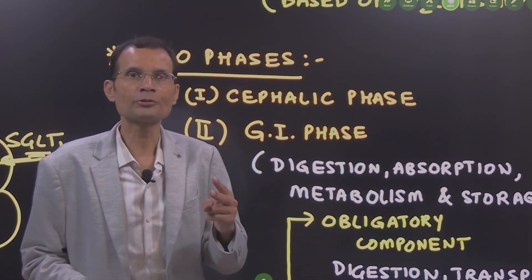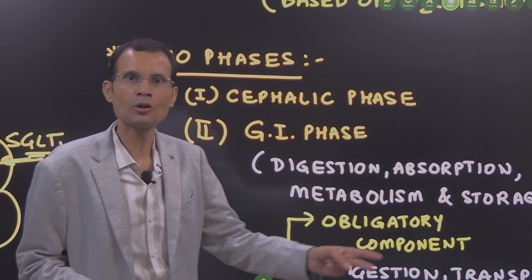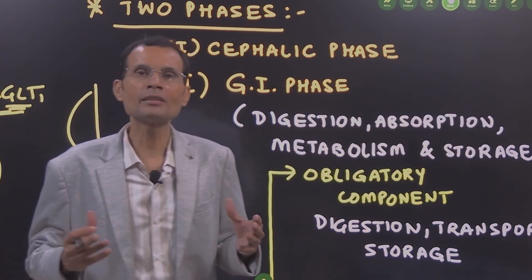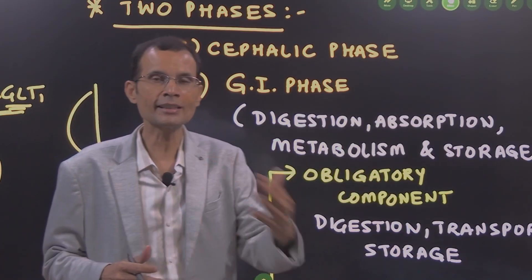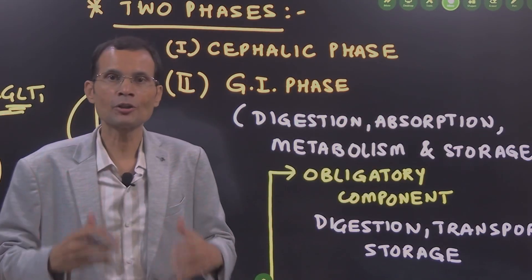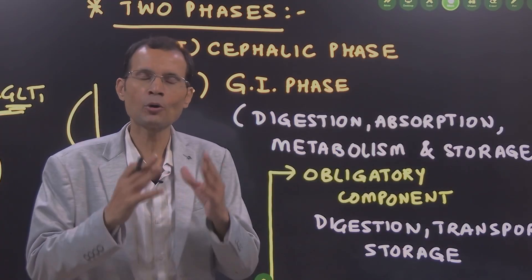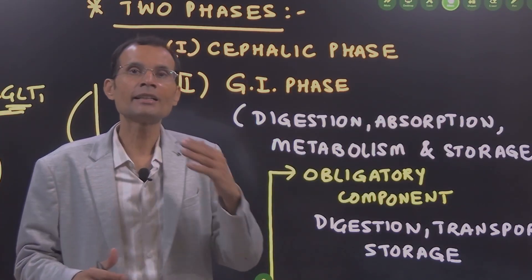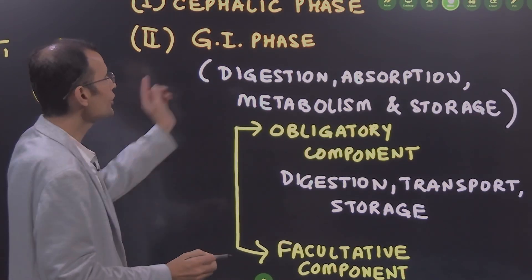There are two phases of this diet-induced thermogenesis or ATP breakdown by the diet. Cephalic phase, you know that. Cephalic phase means whenever we think about the food or we see the food or we smell the foods, there is secretion of certain enzymes or juices in the body like salivary juice or gastric juice and that itself breaks down some ATPs.